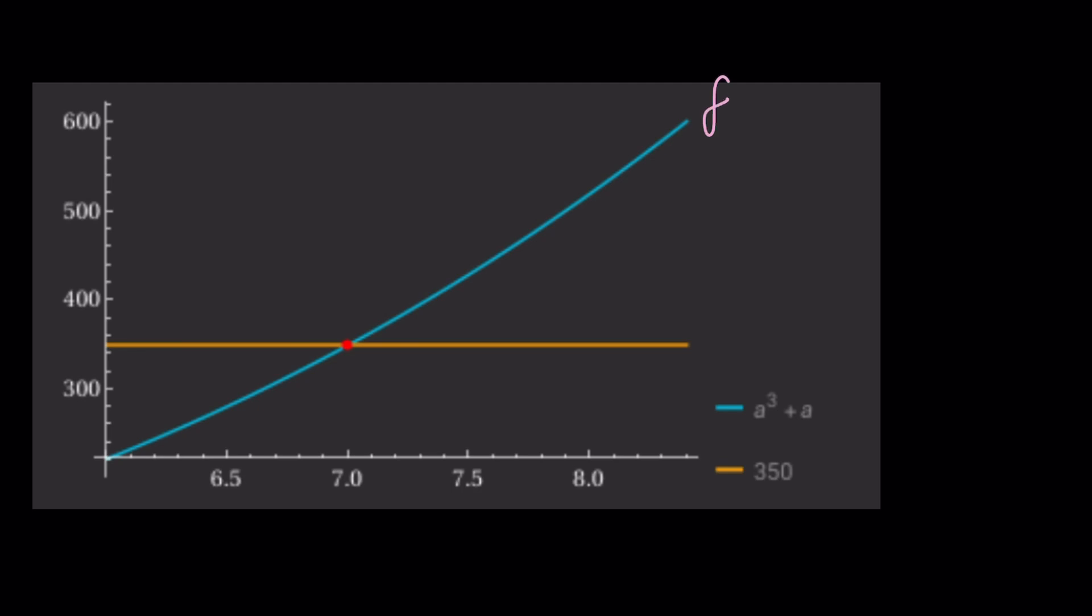This is the graph of x³ + x. As you can see, it is intersected by the horizontal line—let's call that g(x) = 350—at exactly one point because our cubic is always increasing. There's no way it will be intersected one more time. That's why the other two solutions are not real.